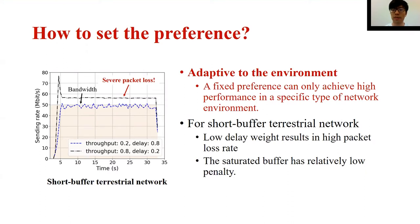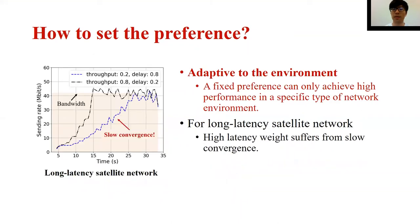We trained two models based on reinforcement learning on the same training environment. The first model put a higher weight on delay, while the latter put a higher weight on throughput. For a short buffer-latency network, low delay weight results in a high packet loss rate, since the saturated buffer has low penalty on the total reward. In contrast, high delay weight suffers from slow convergence in long-latency satellite networks, since it is too sensitive to delay fluctuations. In this example, the first model converges after 25 seconds with extremely low utilization, and the second model converges only after 15 seconds.